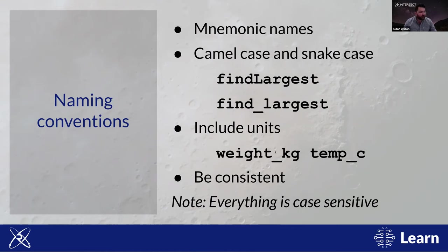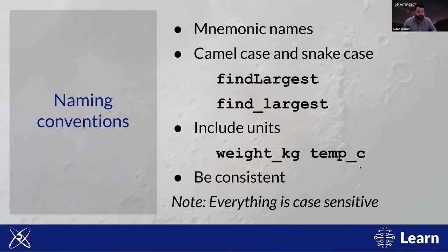Another convention is to include units in variable names for values where units matter — for example, 'weight_kg' or 'temp_c' for weight in kilograms or temperature in Celsius. Once you've picked a convention, stick to it — your convention could differ from these, but be consistent. Also note that programming languages are almost entirely case-sensitive, so beware of that.